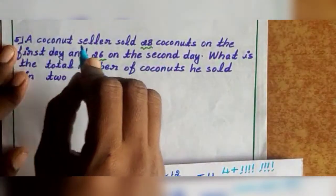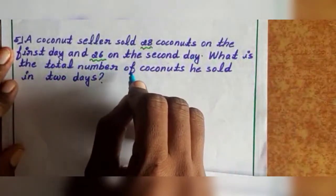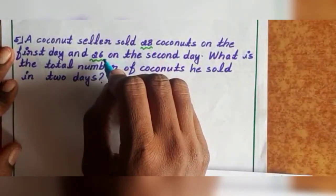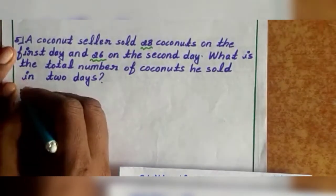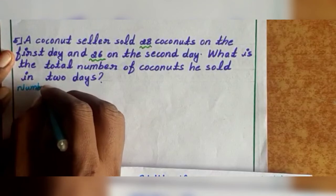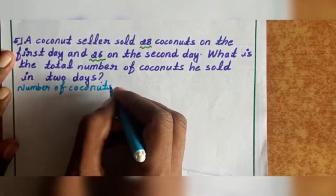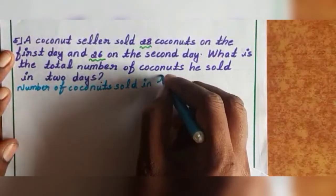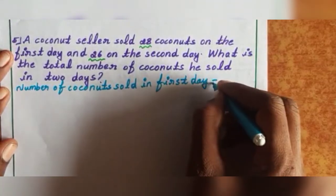Next, fifth one. A coconut seller sold 28 coconuts on the first day and 26 on the second day. What is the total number of coconuts sold in 2 days? So you can add 28 plus 26 to get the answer. First, form the sentence. Write: number of coconuts sold in 1st day — 28.